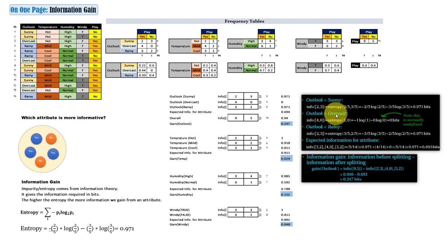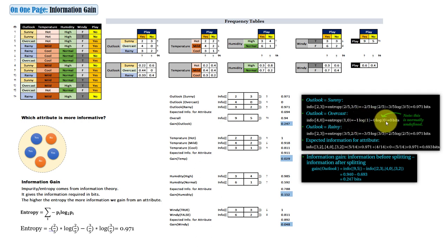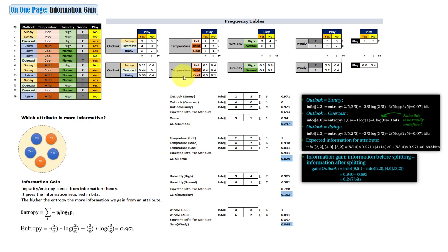For the overcast case, the entropy equals zero bits. For rainy we again have three and two — three over five and two over five — leading to 0.971 bits again, the same as the sunny case. Now we can calculate the expected information for the overall outlook attribute, which combines the entropy values for sunny, overcast, and rainy weighted by their frequencies.